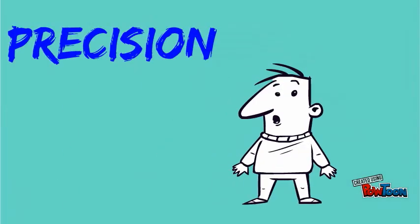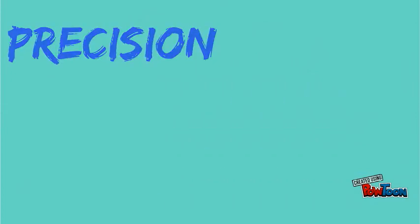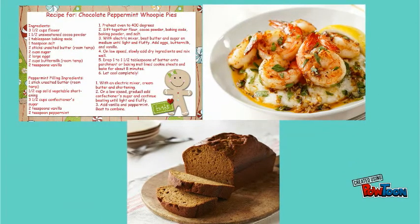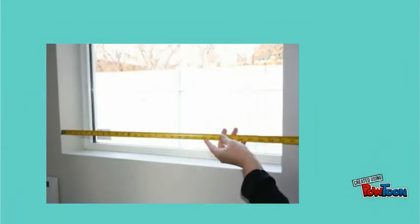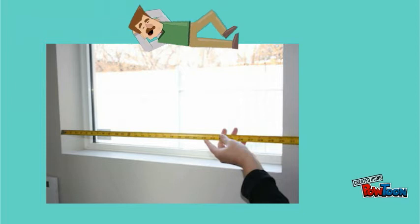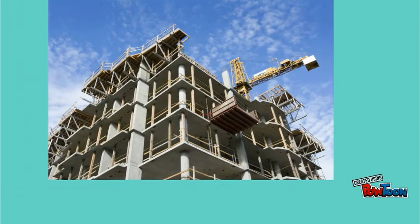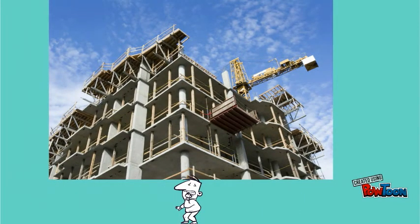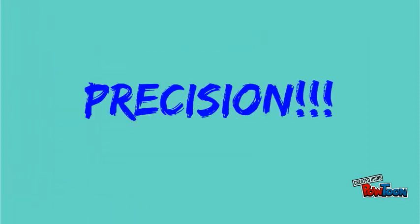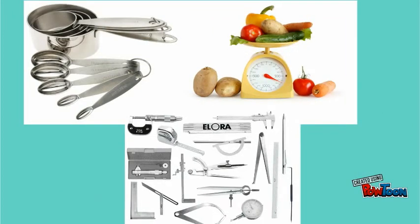We actually use precision a lot in our daily lives — we just don't give it that name. Anytime we follow a recipe to cook something, or measure something in our house like a window, or on a bigger scale when constructing large buildings, all of these have to do with precision because the reproducibility depends on the tool we use to make the measurement.